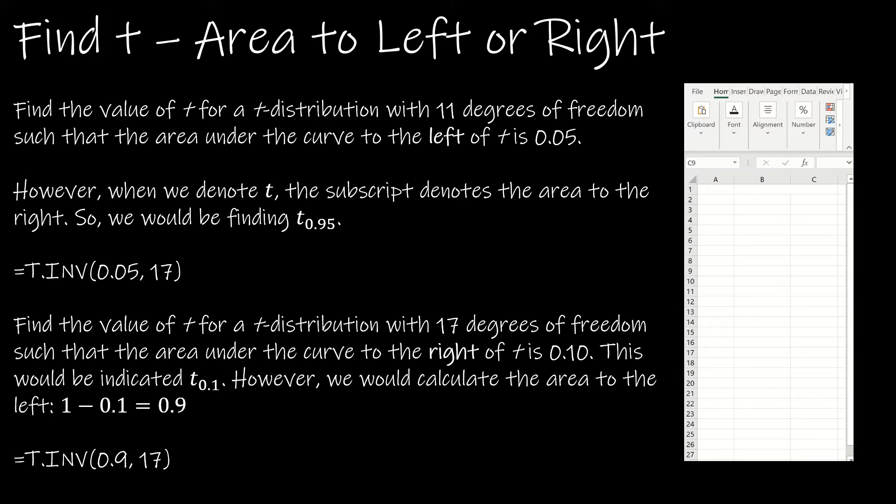We're going to jump right into finding the area or the probability to the left or right of a certain value using the t-distribution as opposed to the normal distribution. One thing you need to keep in mind as you're working through the material in 8.2 and 8.3 is when you see something like t_0.05, the subscript always denotes the area to the right.